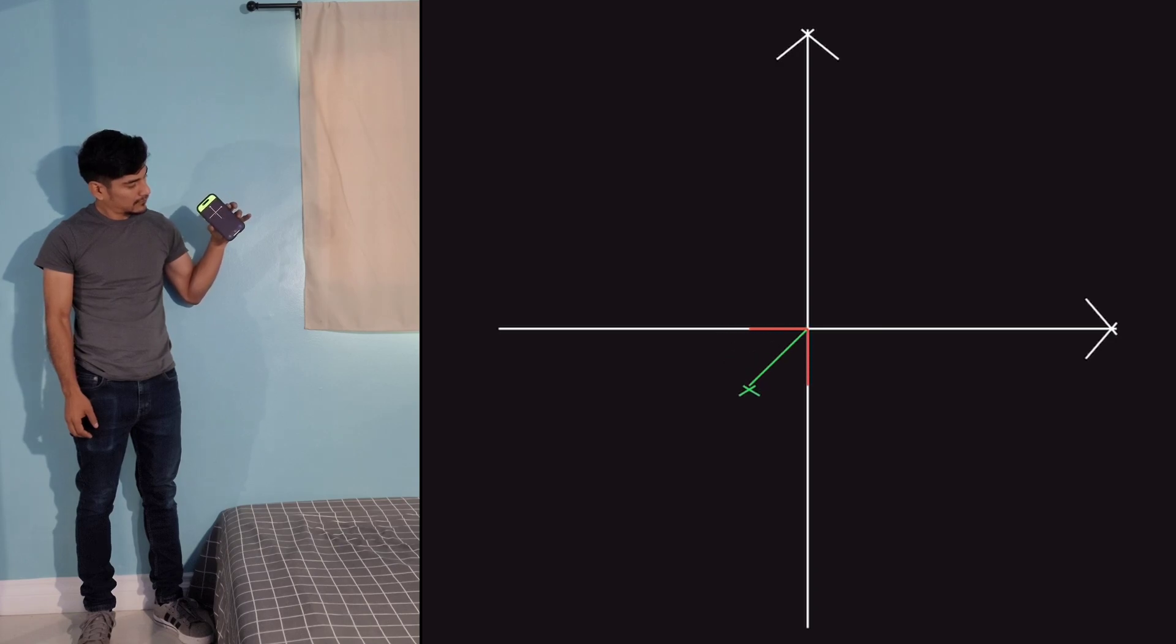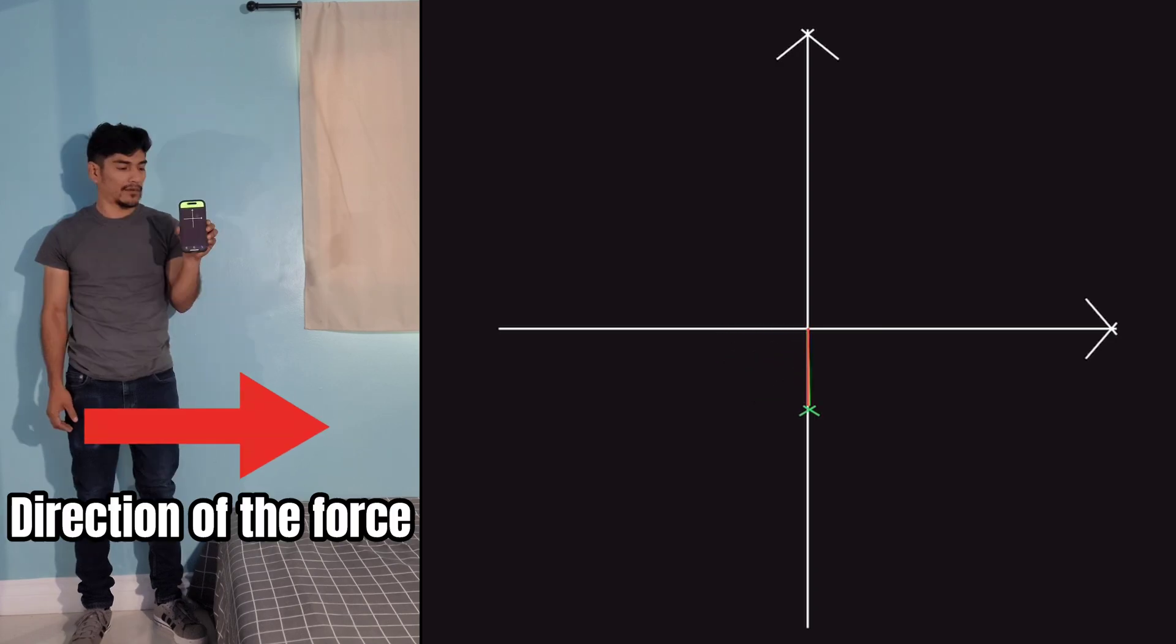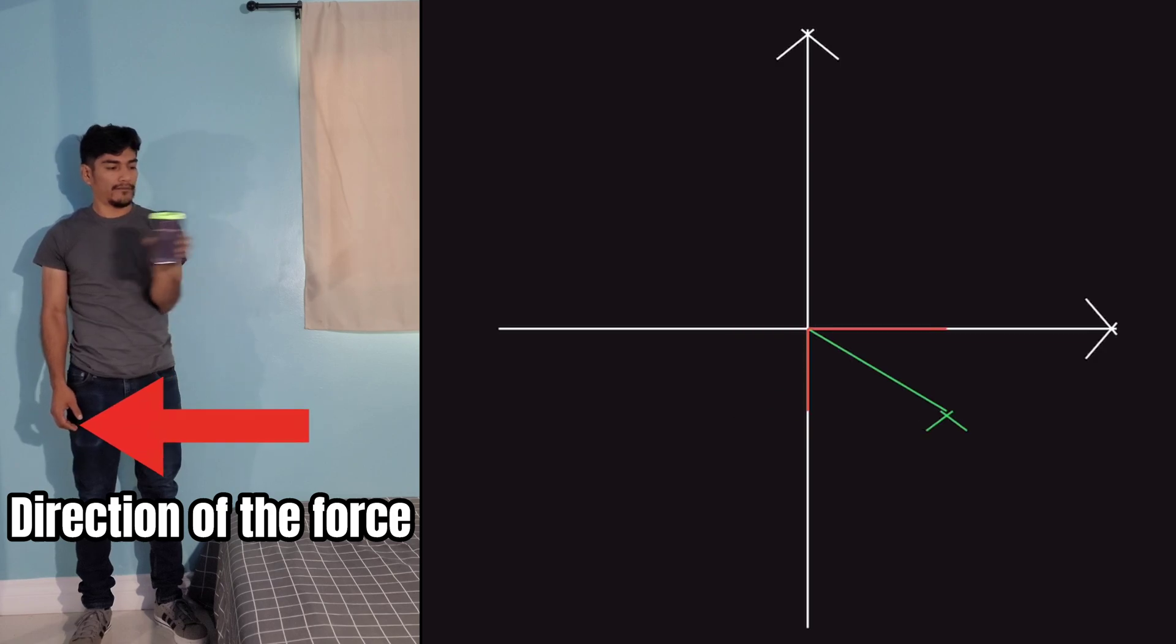However, the vector on the phone is inverted, because when I apply a force to the right, the vector goes to the left. And when I apply a force to the left, the vector goes to the right.